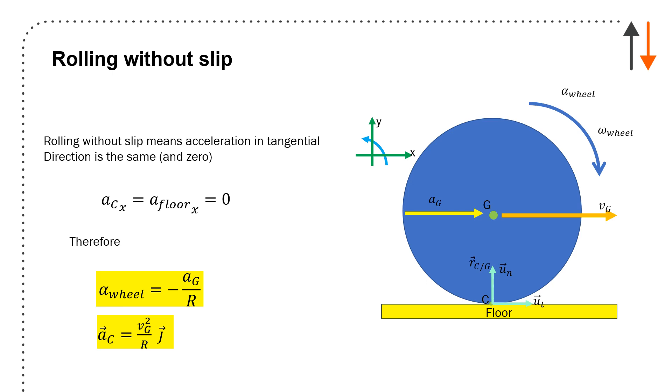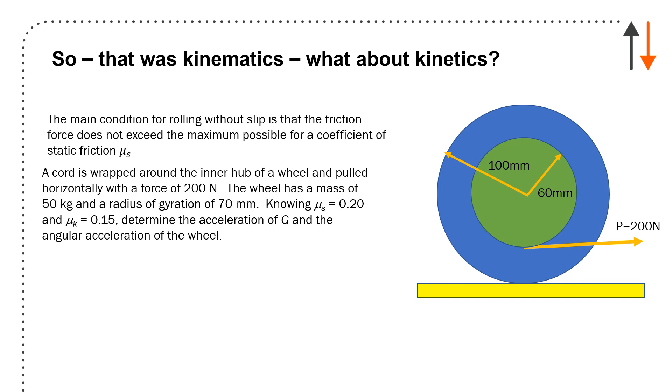If I substitute in terms, I have to ensure that the acceleration tangential is equal to zero, so it's minus ag over r. And then finally, the acceleration of point c is only the normal acceleration, which is velocity of g squared over r. That was kinematics. And we haven't dealt very much up until this point in the course with kinetics. And now that you're in the rigid body kinetics portion of the course, you've got to recognize that the main condition for rolling without slip is that the friction force does not exceed the maximum possible coefficient of static friction.